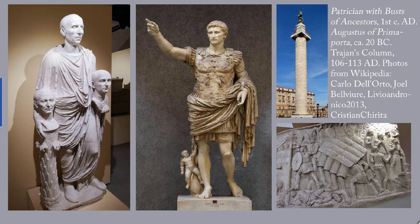These are the examples we'll use as characteristic. On the left is the Patrician with Busts of His Ancestors, 1st century AD, in the Capitoline Museum in Rome. Second from the left is the Augustus of Prima Porta, around 20 BC, in the Vatican Museums. On the right, top and bottom, is Trajan's Column — whole and one scene from it.